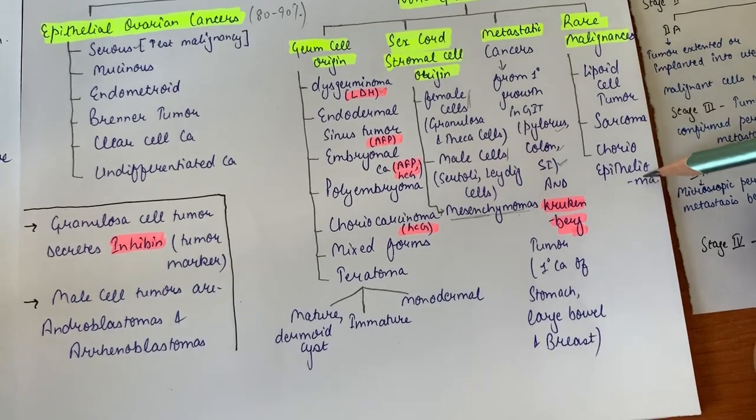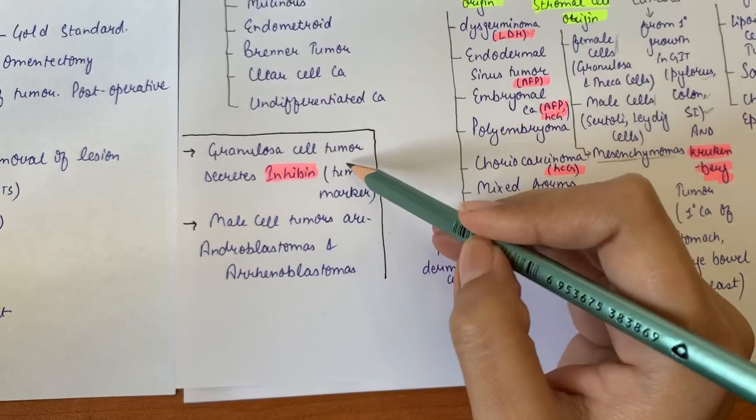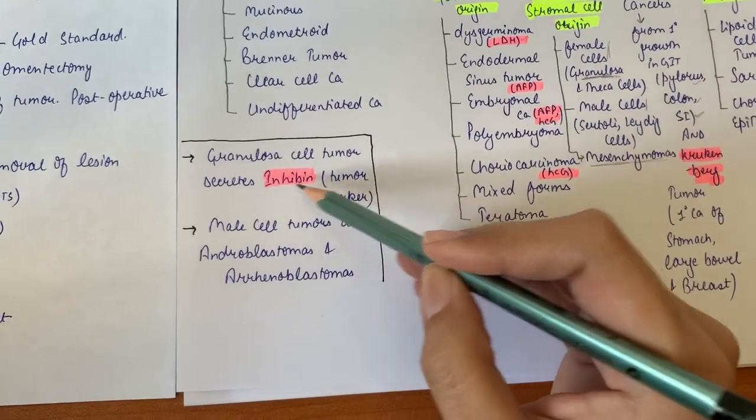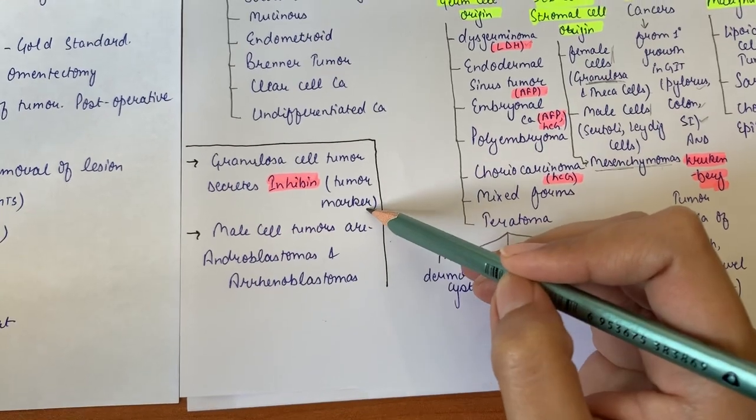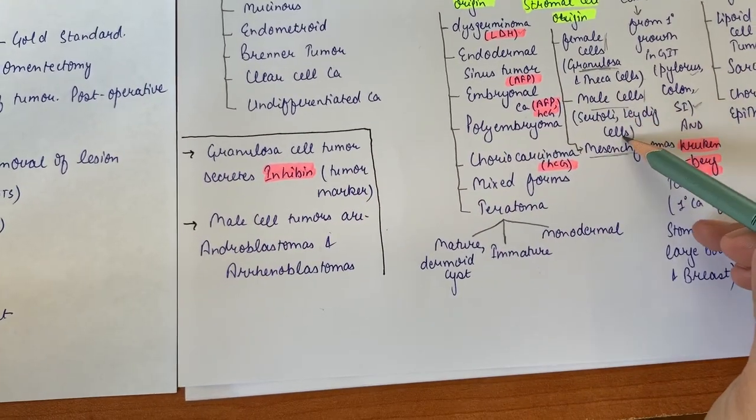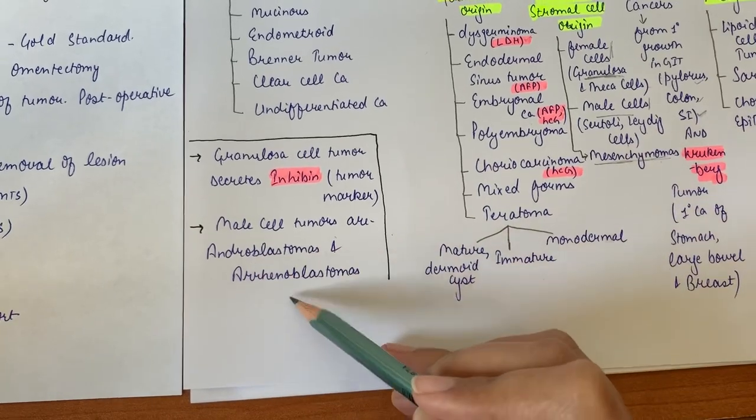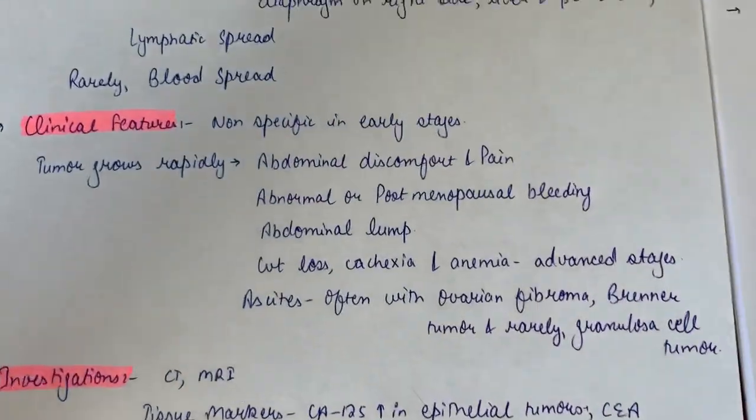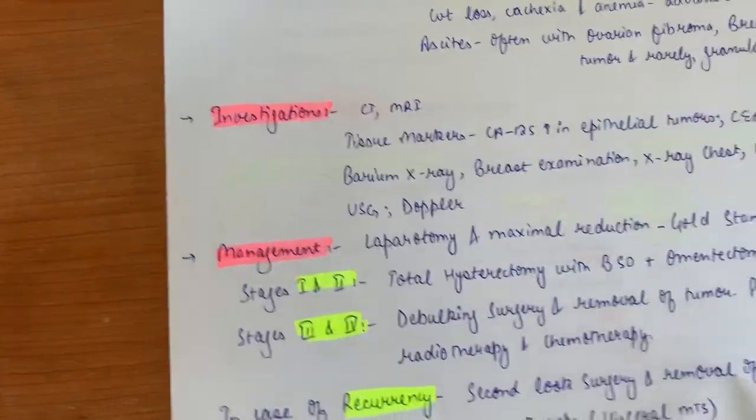Two important points: granulosa cell tumor secretes inhibin that can be used as a tumor marker for this tumor. Male cell tumors - these Sertoli or Leydig cell tumors are called androblastomas. Next we have spread - this tumor can spread by three ways: direct spread, lymphatic spread, and rarely blood spread.